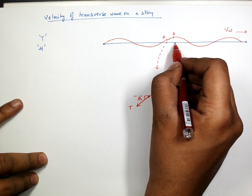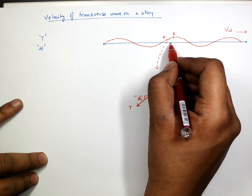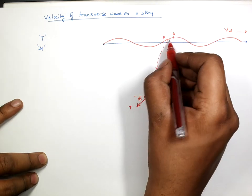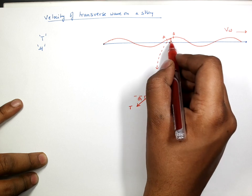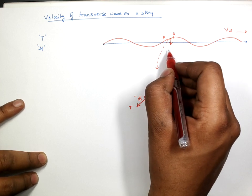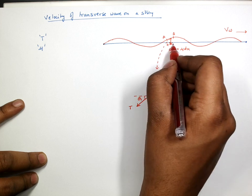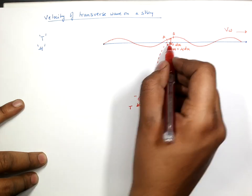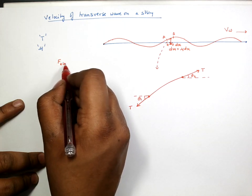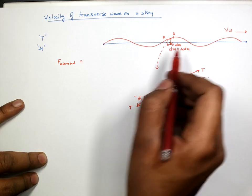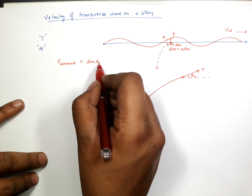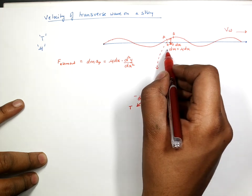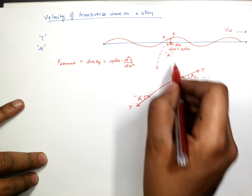The elements of this rope will be moving up and down — they will not be moving in the horizontal direction. They will be moving about their mean position as the wave goes forward. The oscillation of this element will be in the downward or upward direction. The mass of this element is μ dx, where dx is the length of the element. So the force on this element equals mass times acceleration: μ dx times d²y/dt².